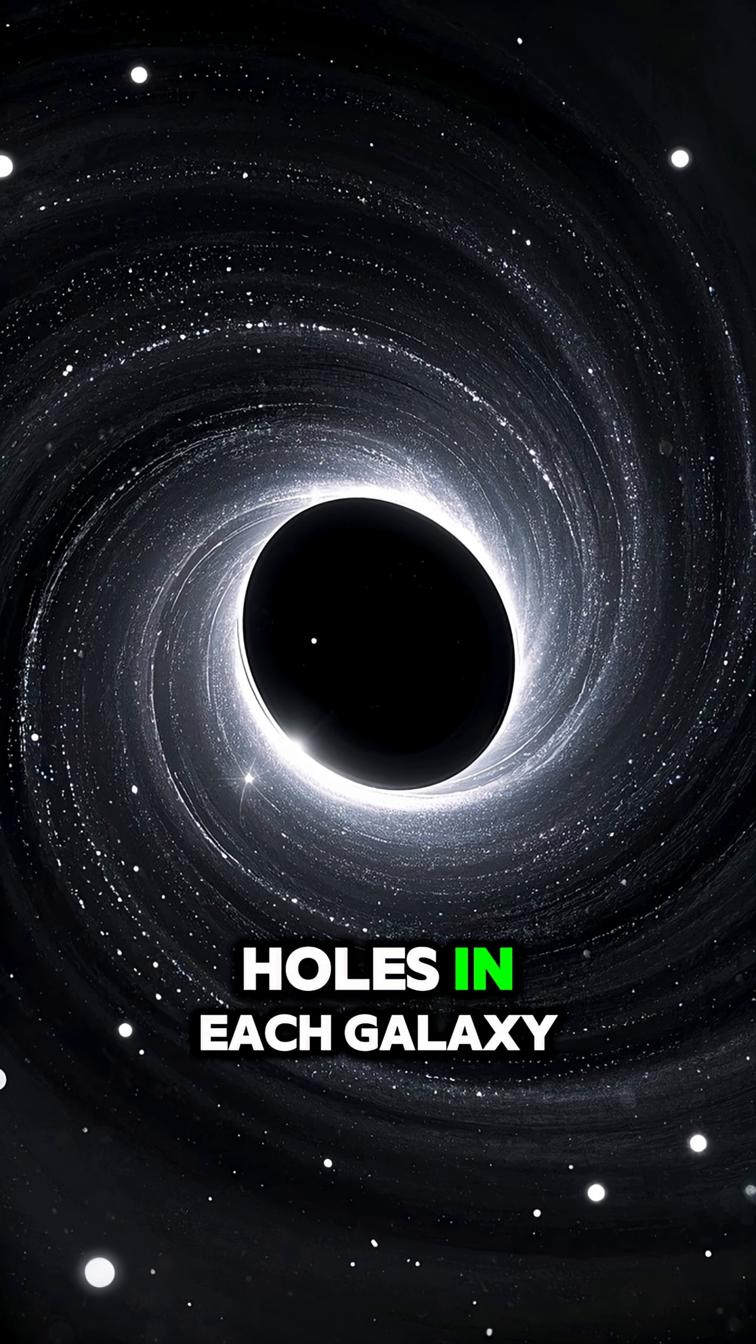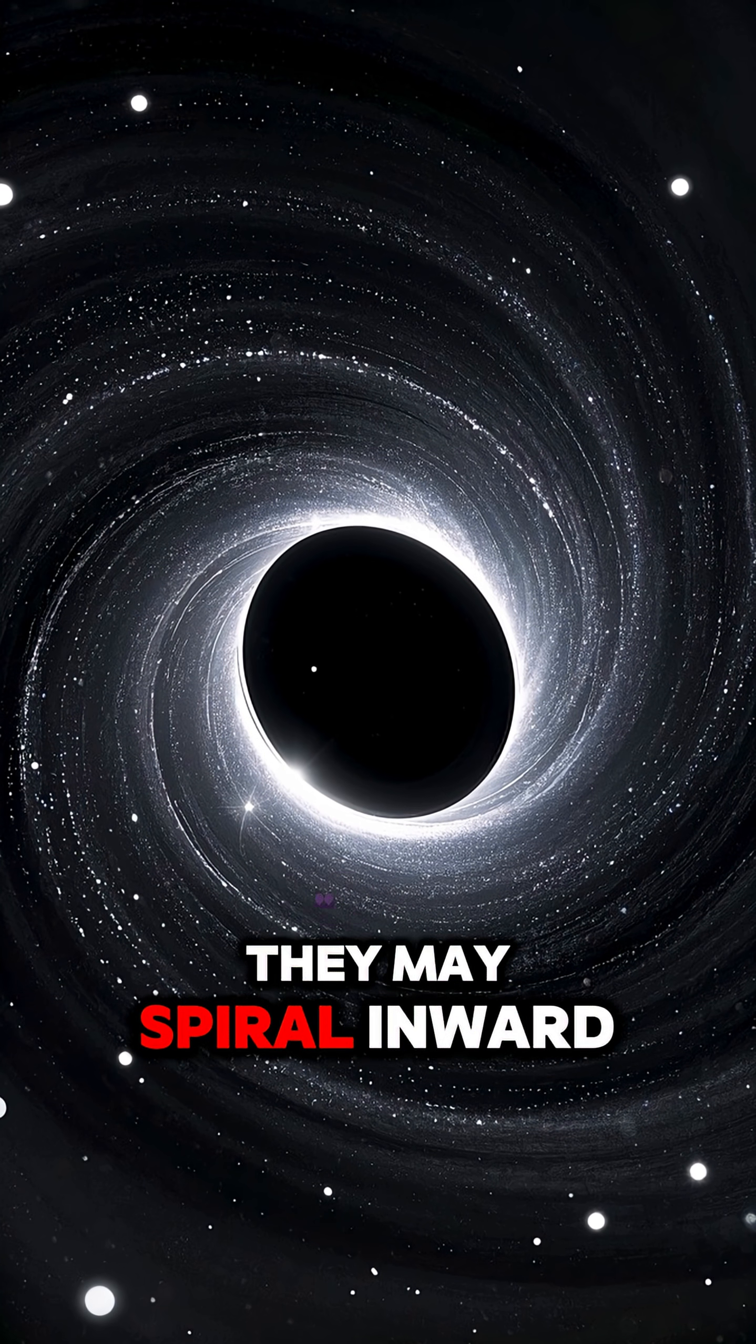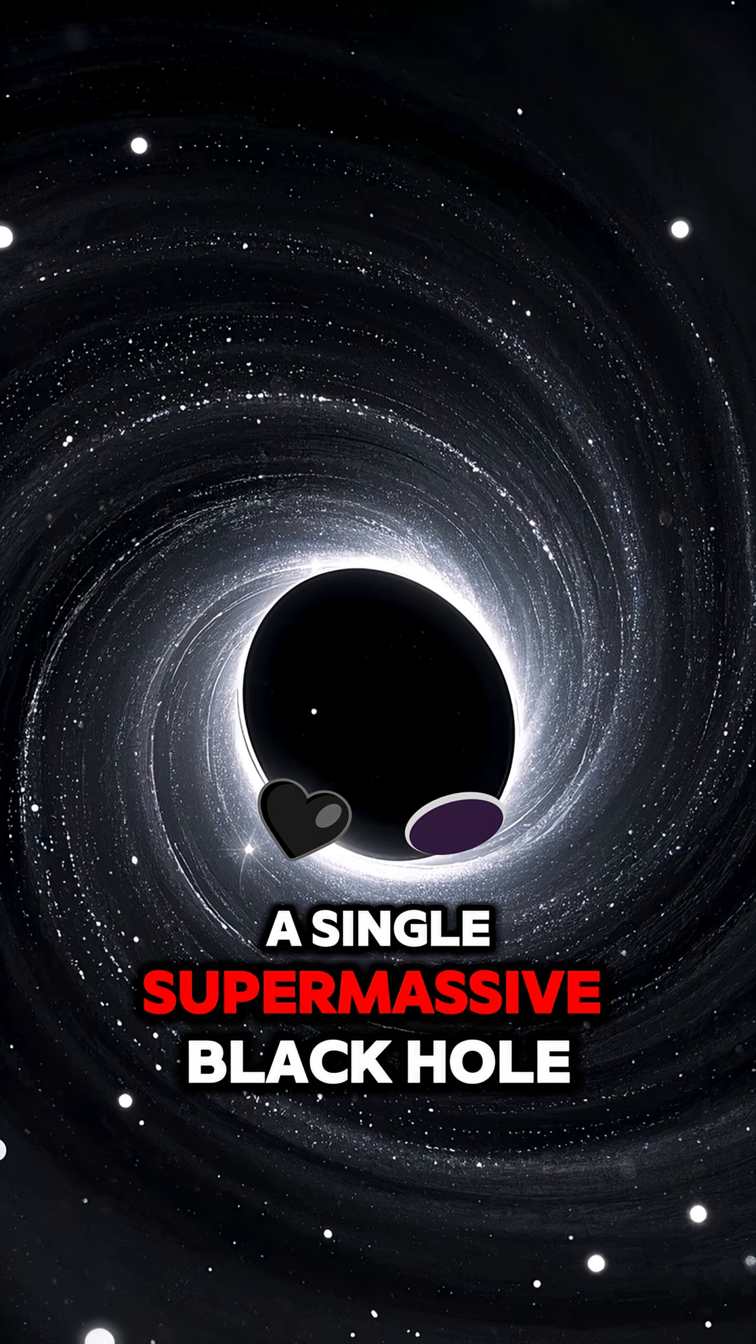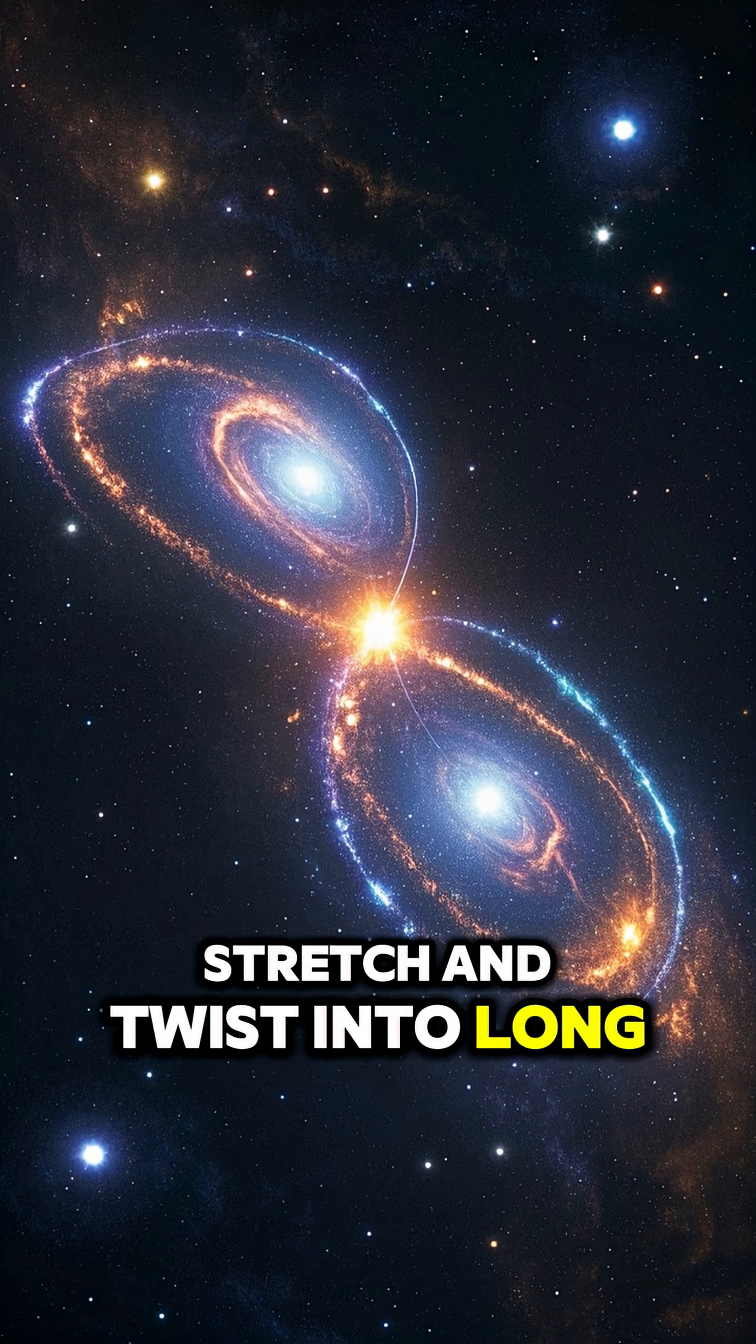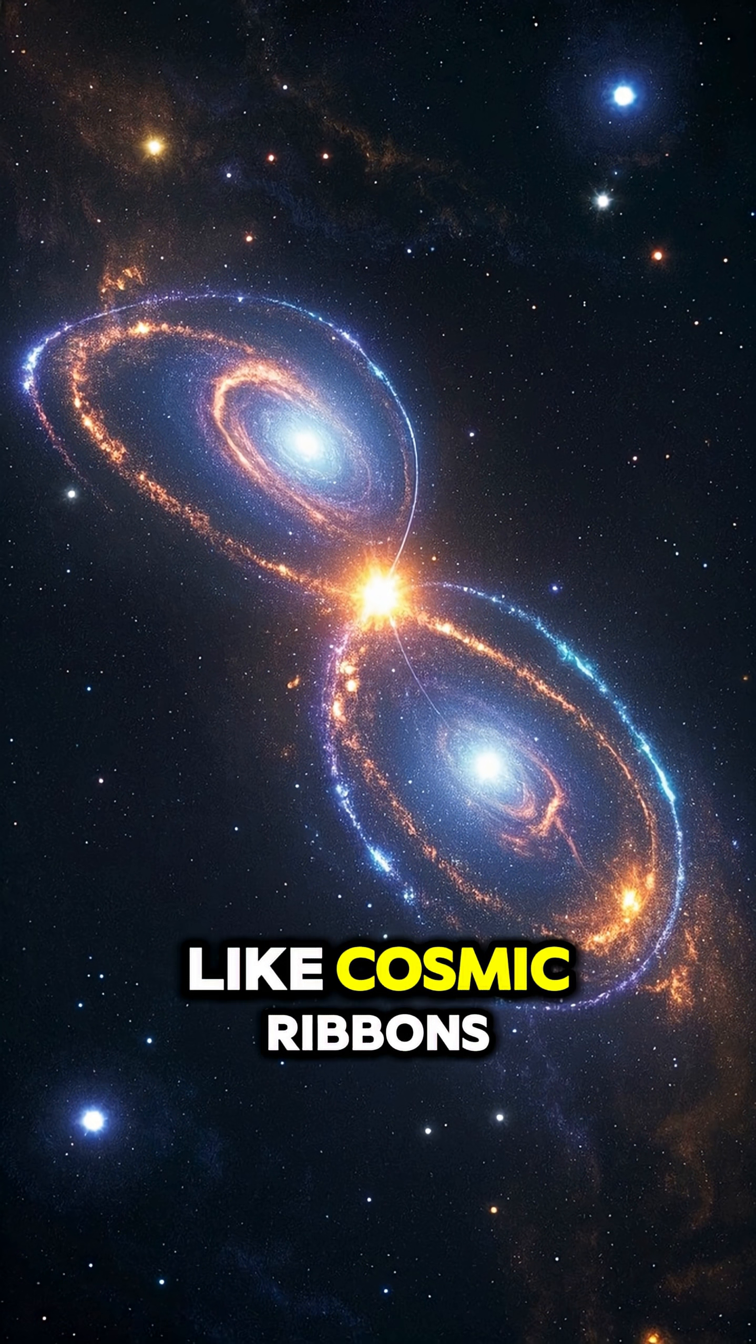If there are black holes in each galaxy, they may spiral inward and merge to create a single supermassive black hole. The two galaxies will stretch and twist into long tidal tails, like cosmic ribbons.